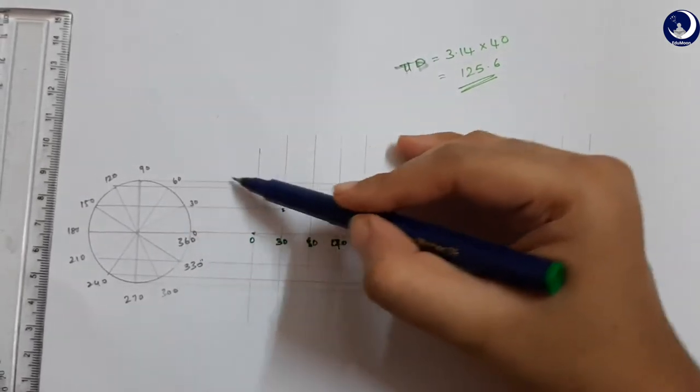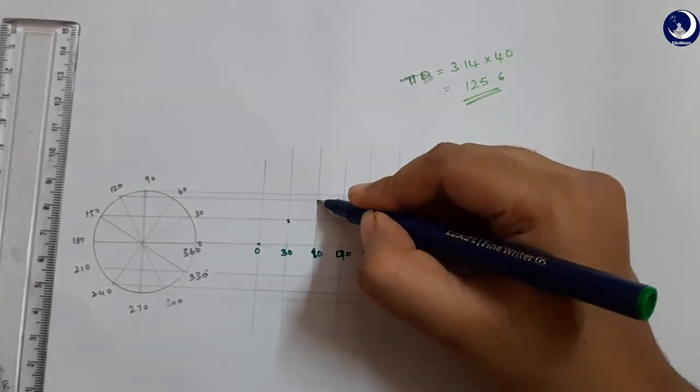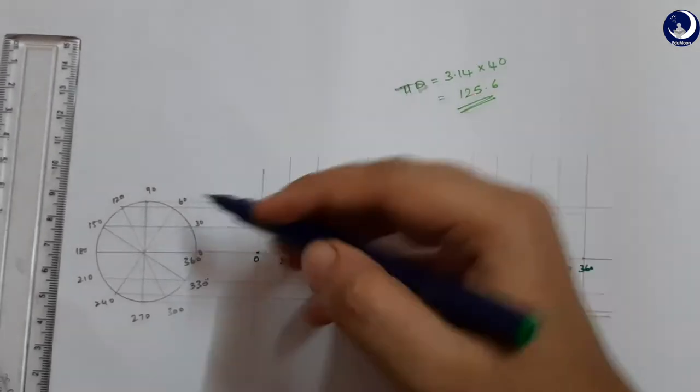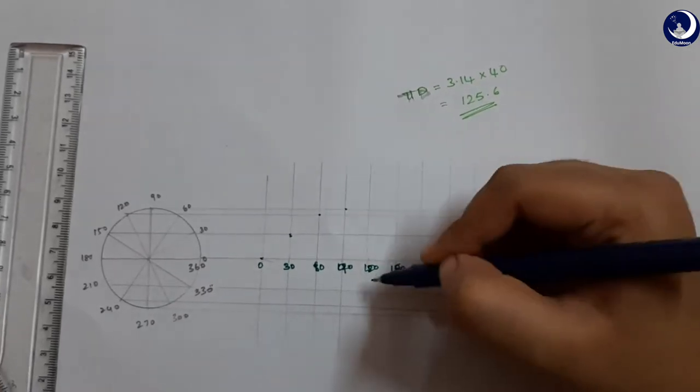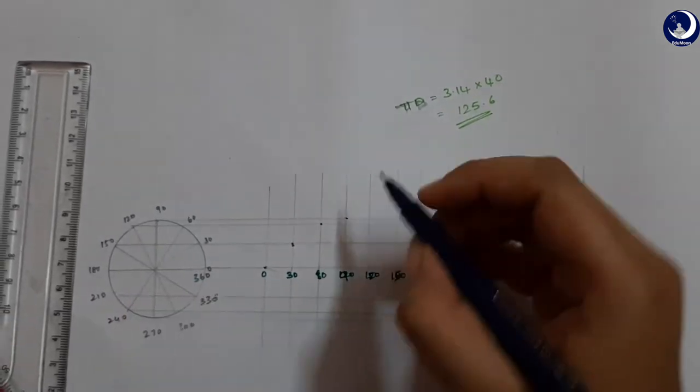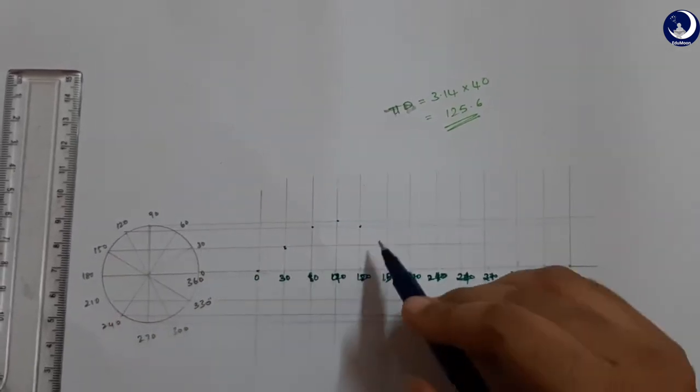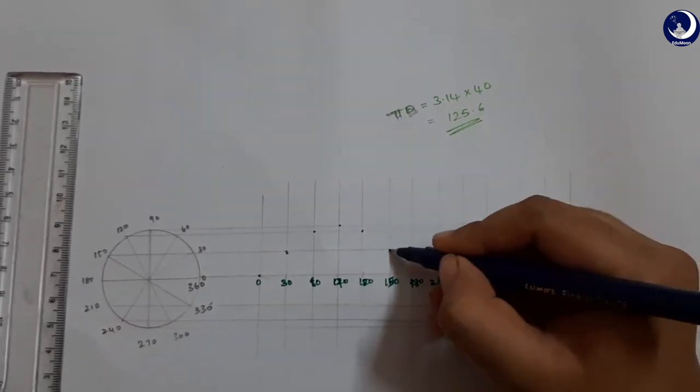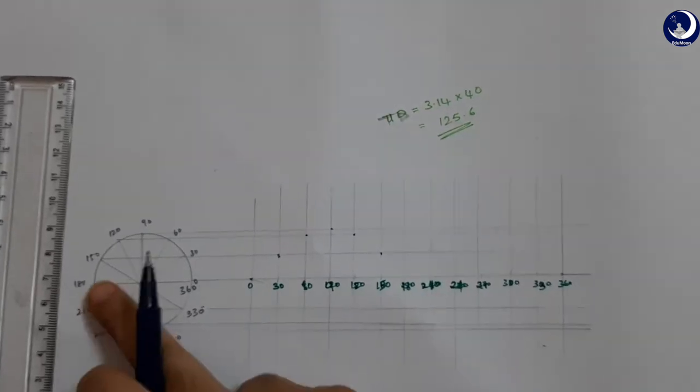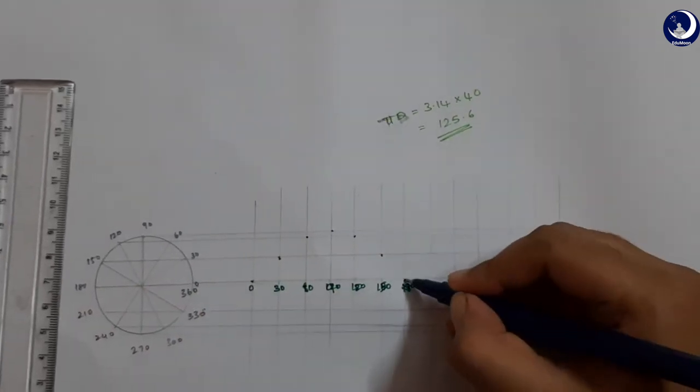60, this is the line for 60. So this is the point. 90, 120, 150, 180. All right.